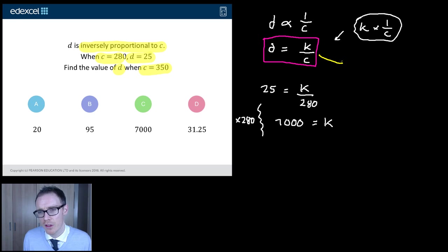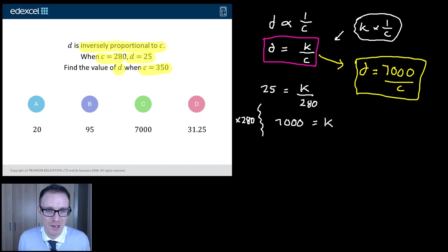Now I'm going to return to my box. And the reason I do it like this is, I put a box around it. So now I've got my value of K, I just rewrite what was in my box, but with my value of K. 7,000 divided by C. So now I've got my equation. And that equation is going to help me work out anything I need to. Find the value of D when C is 350.